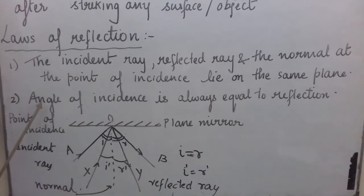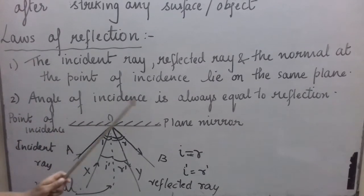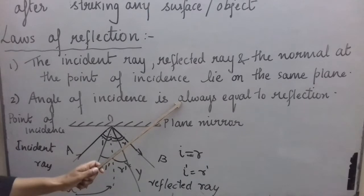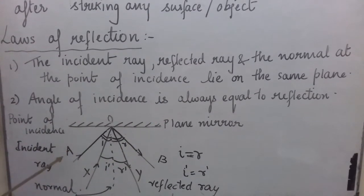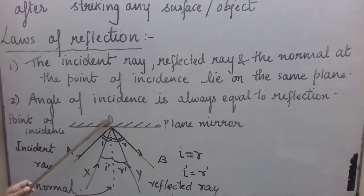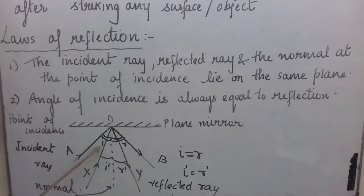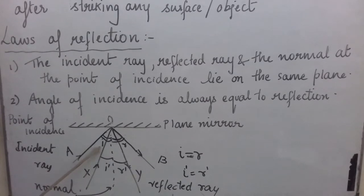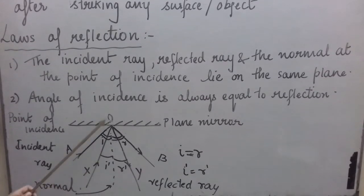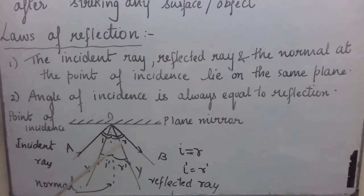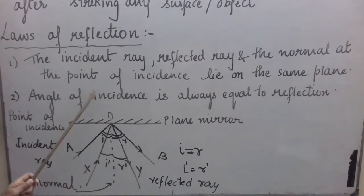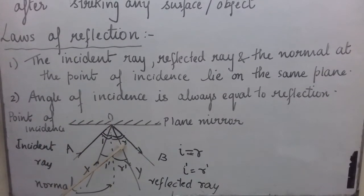The second law states that angle of incidence is always equal to angle of reflection. The angle between the incident ray AO and the normal is represented by I — this is the angle of incidence. The angle R between the normal and the reflected ray OB is the angle of reflection. According to this law, I is equal to R.